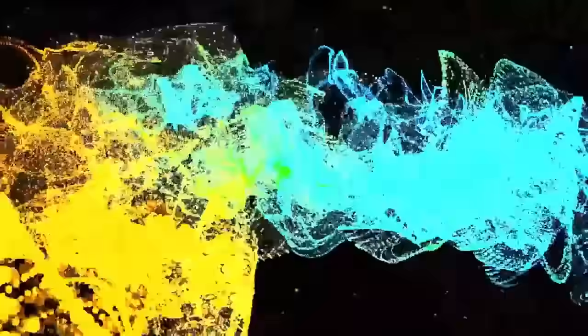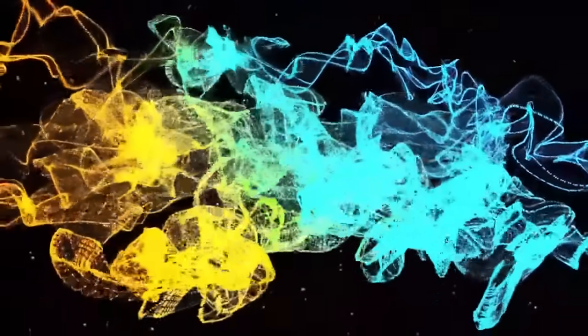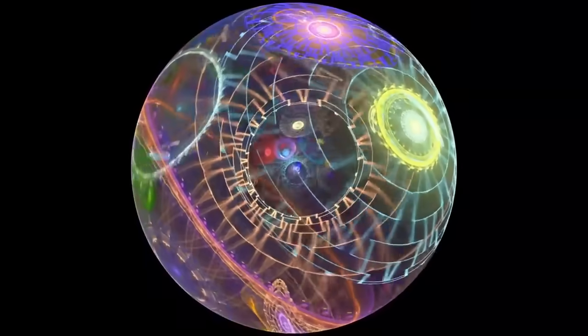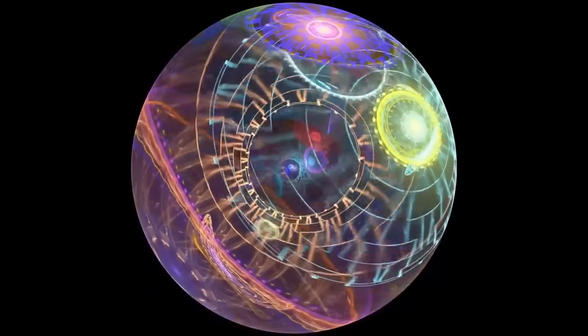Our nearest neighbouring galaxy, Andromeda, is located 2.5 million light-years away and is approaching us at a high velocity. As it draws nearer, our night sky will undergo dramatic transformations.